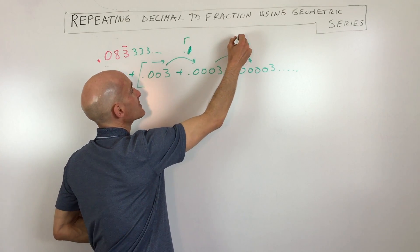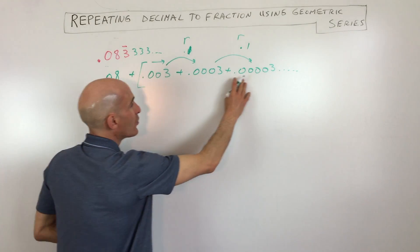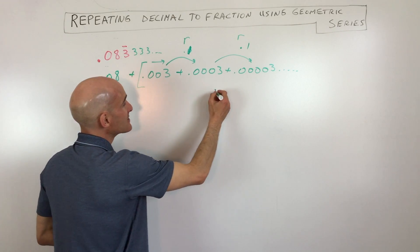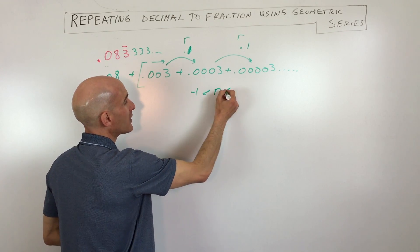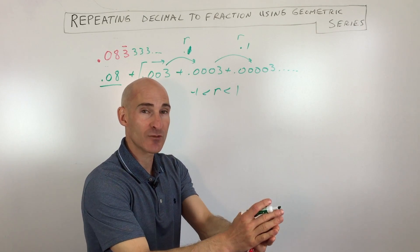And this 0.1 is the r value, that's the ratio in a geometric series. So since this is going on forever, it's an infinite geometric series. And since the ratio is between negative 1 and 1, we know this is going to converge, it's going to get smaller and smaller, it's going to approach 0.